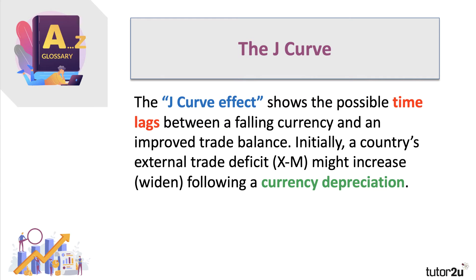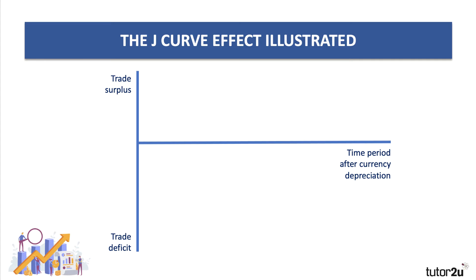Initially, a country's trade deficit — X minus M, the value of exports minus the value of imports — might actually get bigger. The trade deficit may widen after a currency depreciation. It's good to have a diagram to show this possible effect: the J-curve effect.